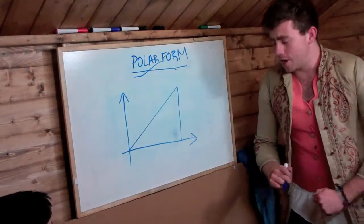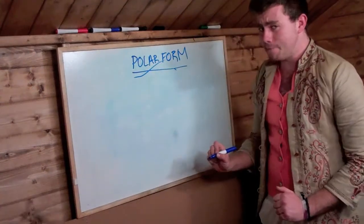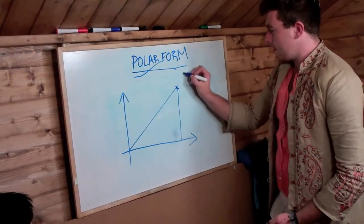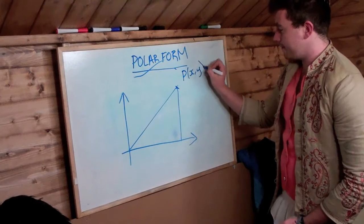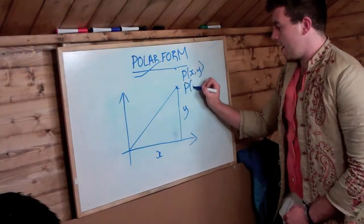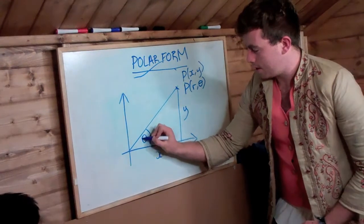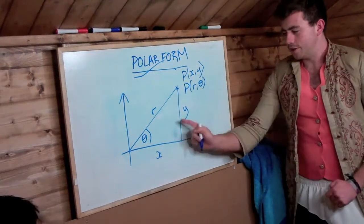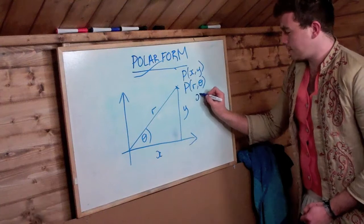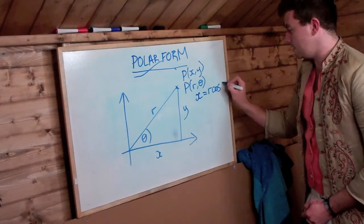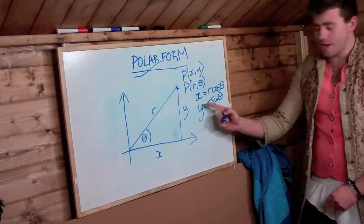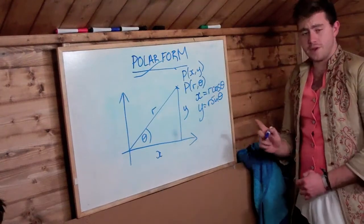One thing you will need to know is how to switch from the polar form to the Cartesian form. Let me show you how. In the Cartesian form, you would write point P as x, y. In the polar coordinate system, you would write it r theta. Now, this triangle can closely link the polar and Cartesian forms using x equals r cos theta and y equals r sine theta. So using this, we can switch between forms. Let me show you with an example.